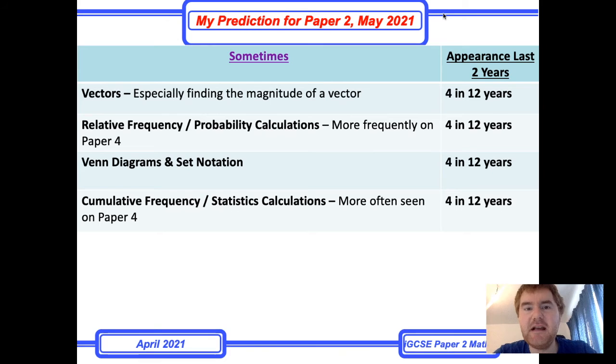Now we go into the sometimes category. What you'll notice is most of these topics appear on Paper 4 generally speaking. But every couple of years or so, every one paper in six or one paper in five, they'll put this onto Paper 2 as well.